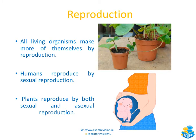The second characteristic is reproduction. All living organisms can make more of themselves by reproduction. Humans can reproduce by sexual reproduction, and plants can reproduce by both sexual and asexual reproduction. With asexual reproduction, if we look at the strawberry plants on the right hand side, they produce what are called runners. The main strawberry plant produces these runners which extend to somewhere else in the soil, and then another plant will start to form from those runners.